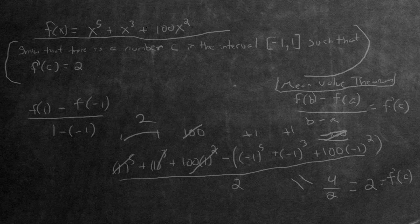Because f(x) is continuous and differentiable everywhere, we can apply the Mean Value Theorem on the interval [-1, 1] to conclude that there is a number c in the interval such that f'(c) = 2.